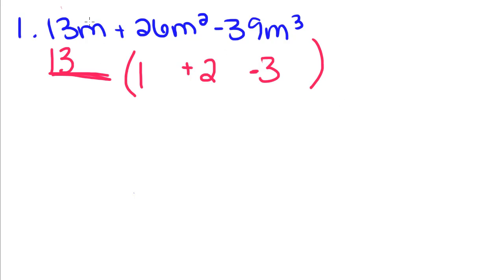And then this has an m, an m squared, and an m cubed. So the largest amount of m's we can pull out of each one of these terms is just 1. So you're just left with 1 here, m squared divided by m leaves you with 1m, and m cubed divided by m leaves you with m squared.